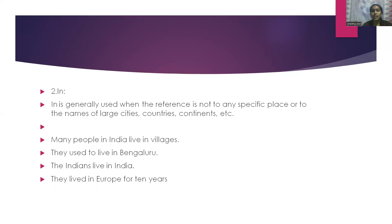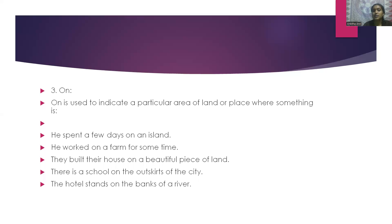The next word is 'in'. In is generally used when the reference is not to any specific place, or for names of large cities, countries, continents, etc. For example: many people in India live in villages. They used to live in Bengaluru. The Indians live in India. They lived in Europe for 10 years. 'On' is used to indicate a particular area of land or place. For example: he spent a few days on an island. He worked on a farm for some time.